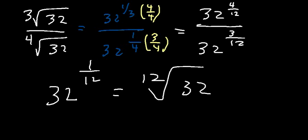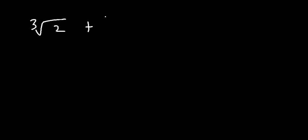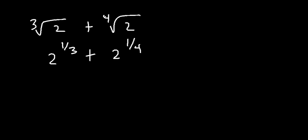Now you know how to simplify radicals, especially with different index numbers. You can multiply or divide radicals with different index numbers by converting to exponential form. However, you can't add or subtract radicals with different index numbers. For example, cube root of 2 plus the 4th root of 2 can't be simplified — it's like x cubed plus x to the 4th. You can only combine radicals with different indices through multiplication or division, not addition or subtraction.